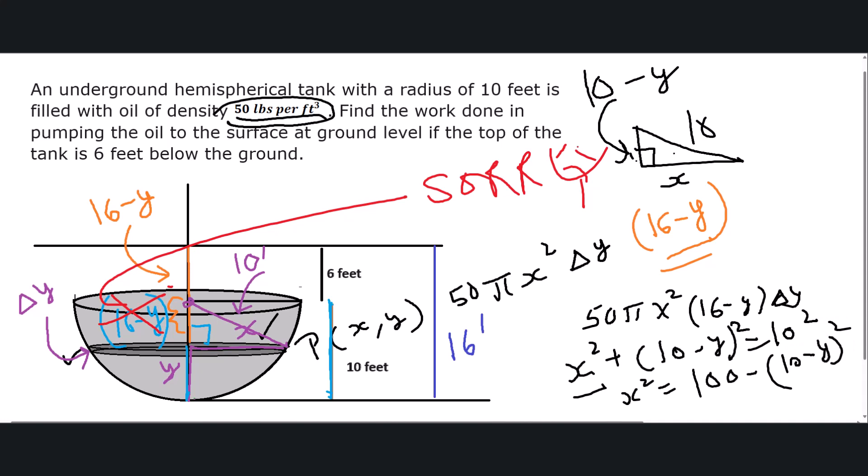We are able to change x in terms of y. Now our integral will be the work done, which is the force times the distance. The force here is the weight of this thin slice, and x² came out to be 100 minus (10 - y)², and this is being lifted by a distance of (16 - y) times delta y. We are lifting such slices from y equals 0 to y equals 10.